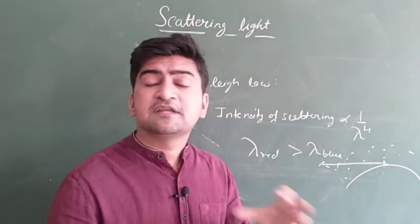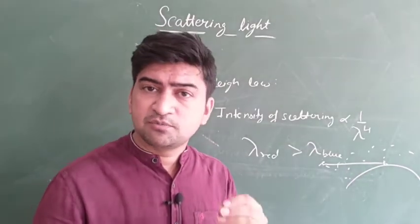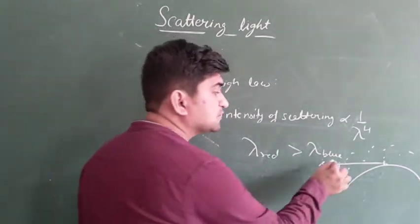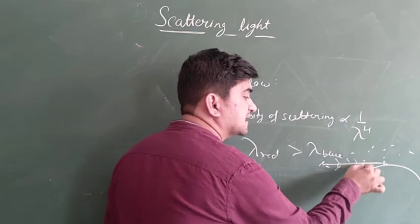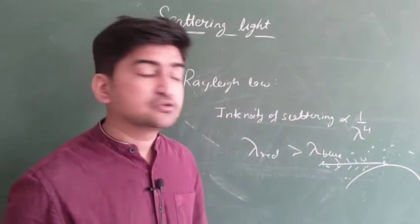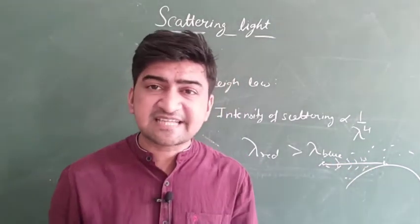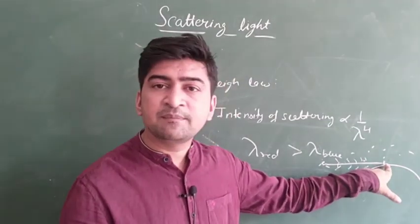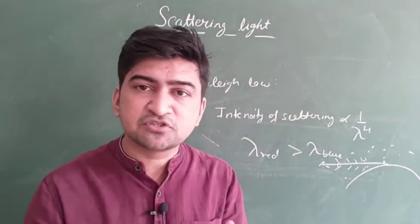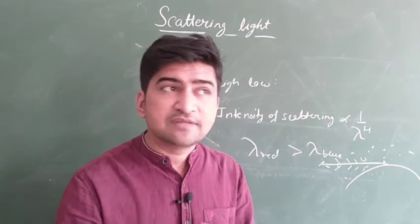During sunrise and sunset, the radiation coming from the sun that reaches the earth passes through the maximum part of the earth's atmosphere. Hence most of the blue light gets scattered away. The red light, which is least scattered, enters our eye. Which color reaches our eyes? Red, because it's least scattered. That's why the object...